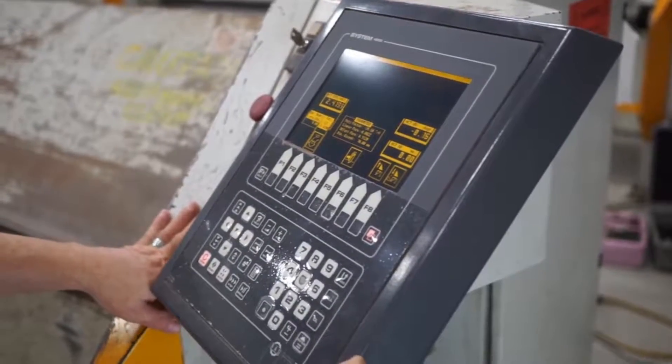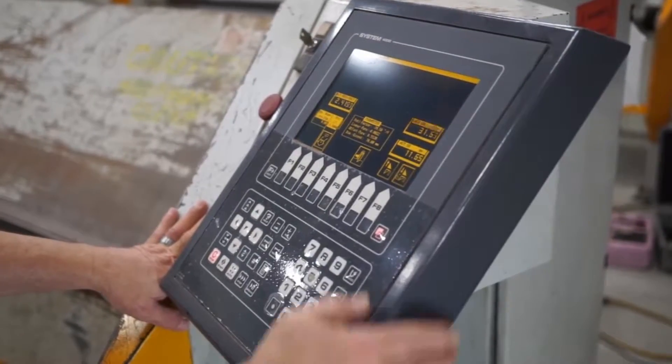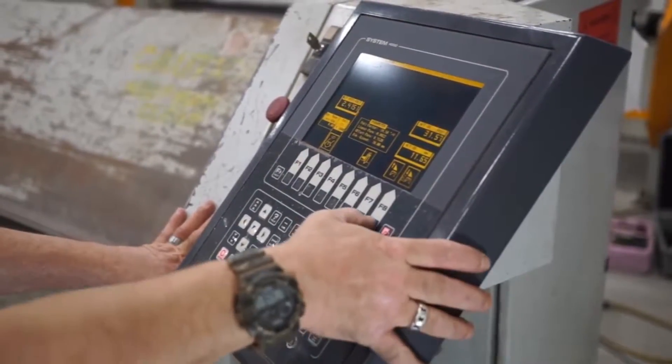And essentially I'm going to lie to the machine, tell it that 1.5 is where zero is which changes this to 11 now and it'll let me clamp it through the bottom again.